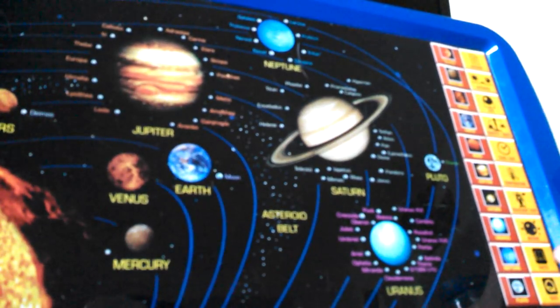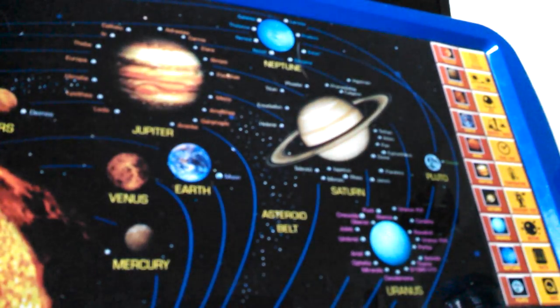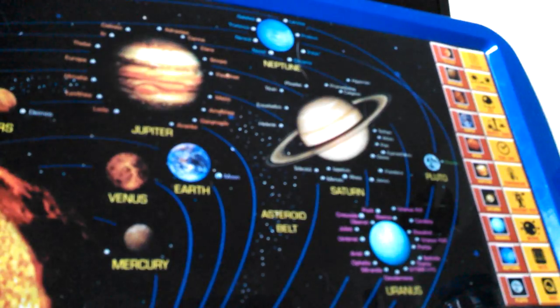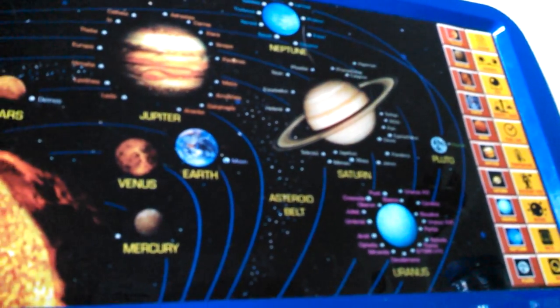This is the planet Saturn. Saturn has seven major rings, most of which are composed of ice particles the size of fingernails and ice chunks the size of a bus. The rings are about six miles thick. Saturn's winds move at speeds up to 1,100 miles per hour.